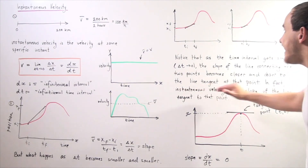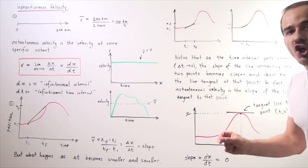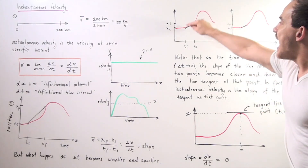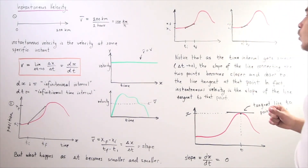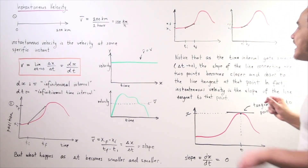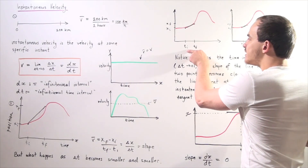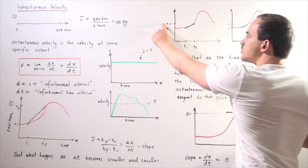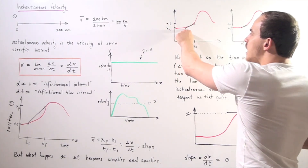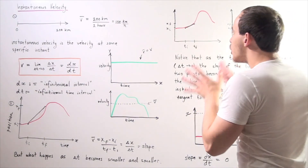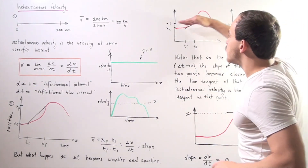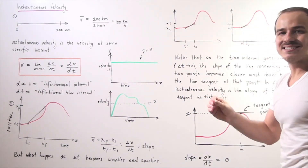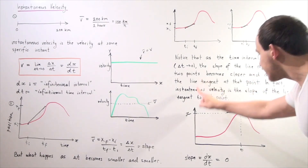In fact, our instantaneous velocity is the slope of the line tangent at that point. So once again, as t-f approaches t-i and x-f approaches x-i, eventually the slope of the tangent at that point will be our instantaneous velocity.